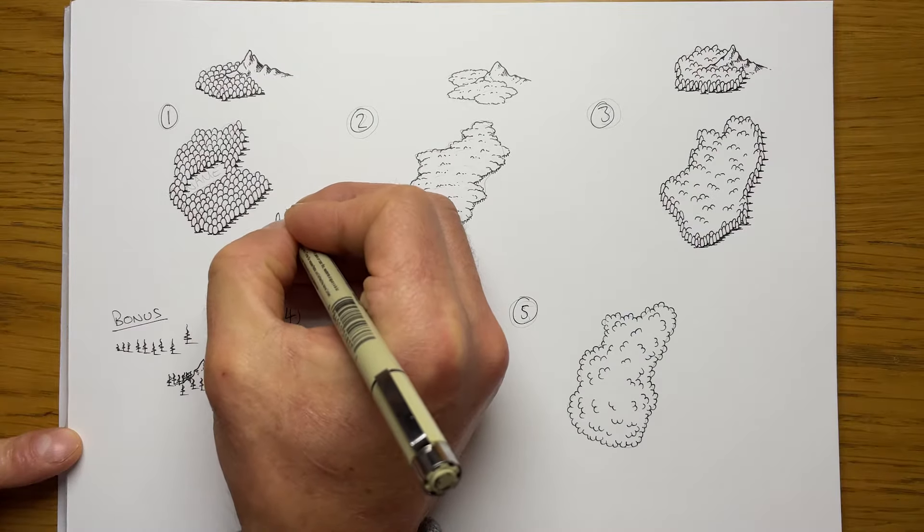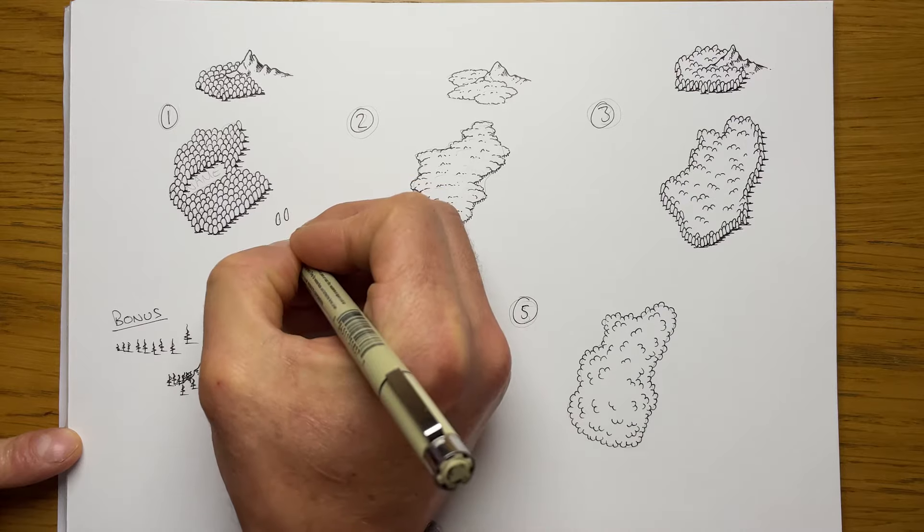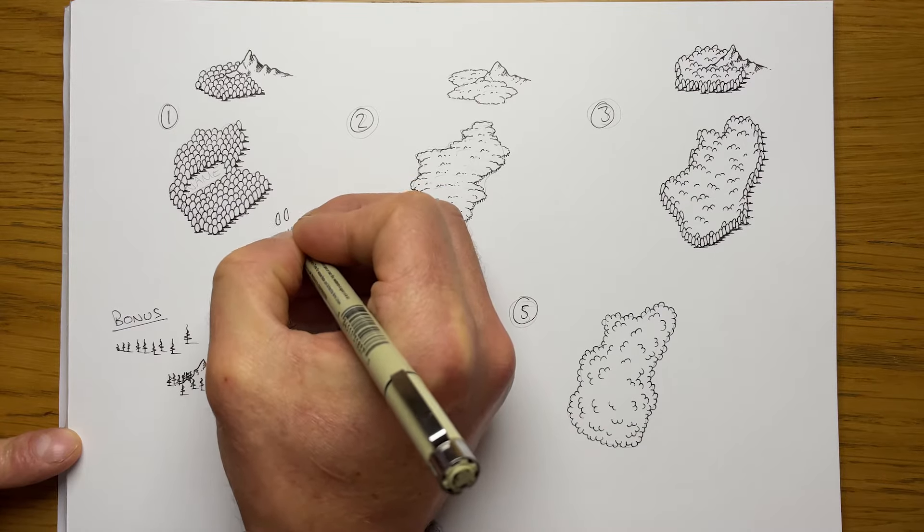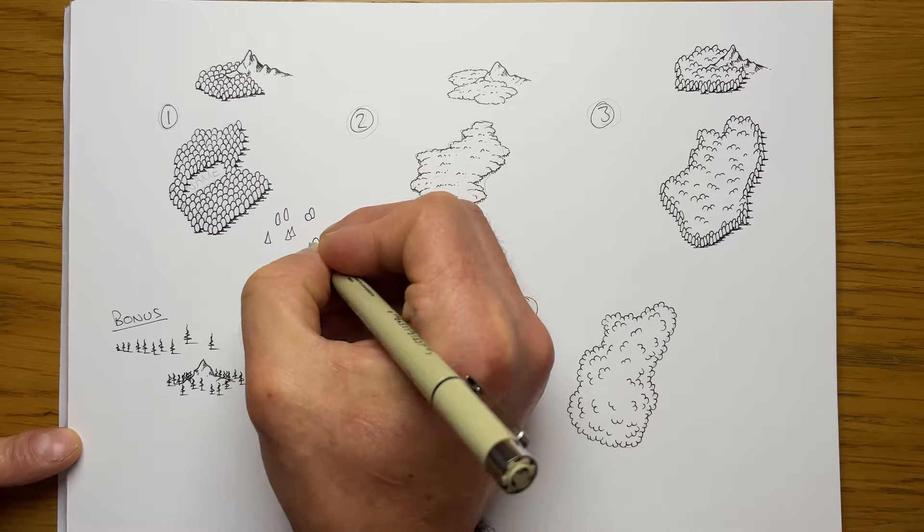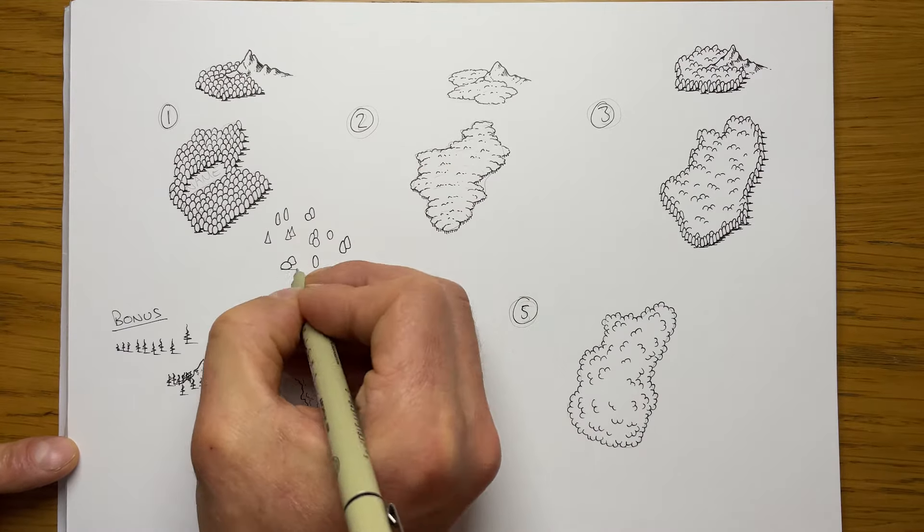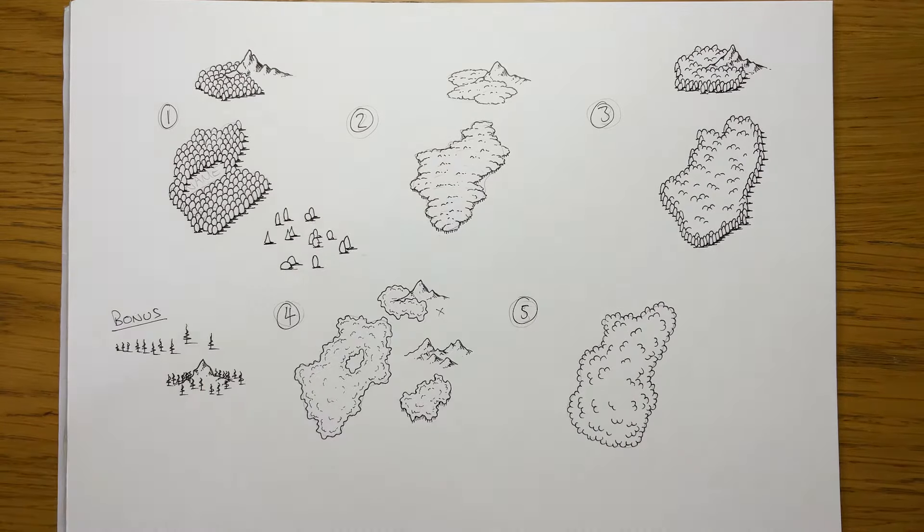A few extra options for technique one: vary the shape of the trees you're going to draw. You can see you can use little triangles, you can use circles. It's quite nice to mix some circles and ovals that gives the feeling of different sorts of trees within a forest.